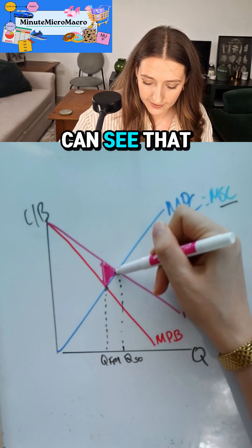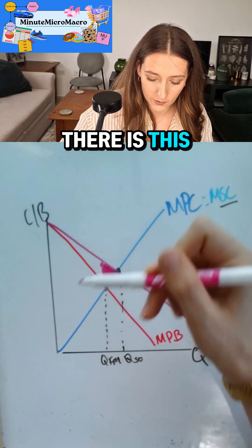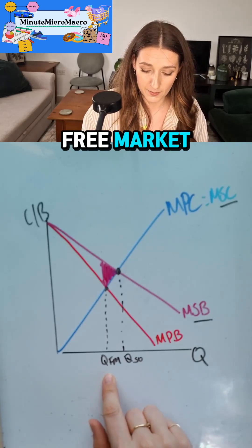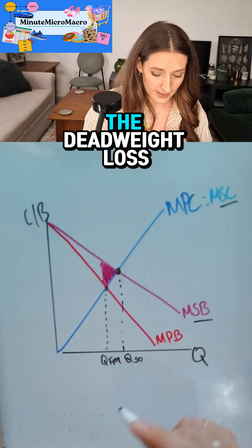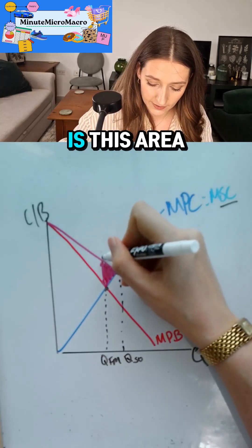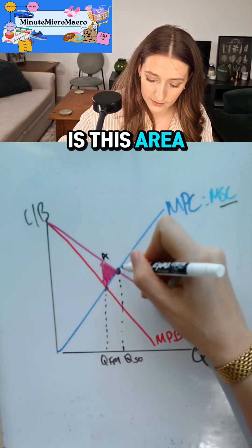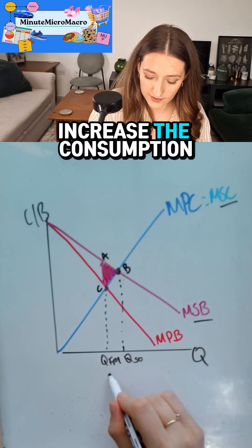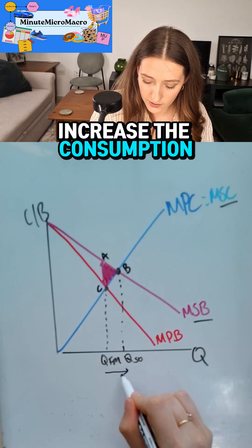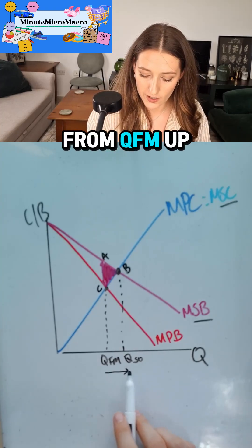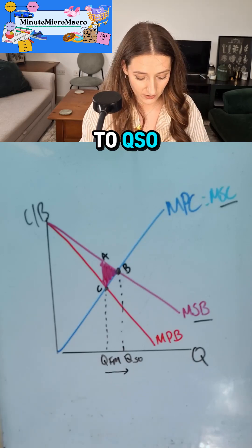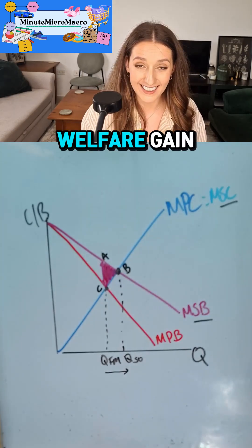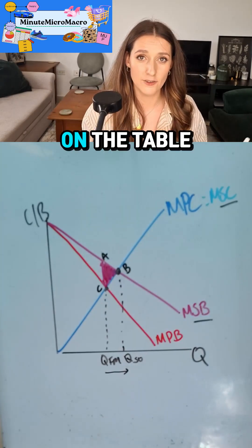That socially optimal point is where those two lines intersect — we label that Qso. We can see that if left to the free market, we would under-consume vaccines. The deadweight loss is the area ABC. We want to increase consumption from Qfm up to Qso to absorb all of that net welfare gain that's been left on the table.